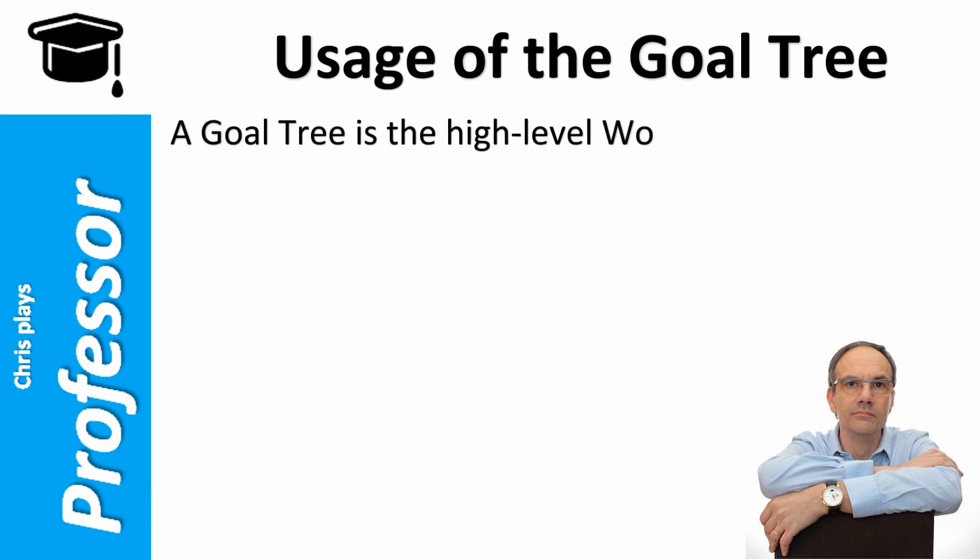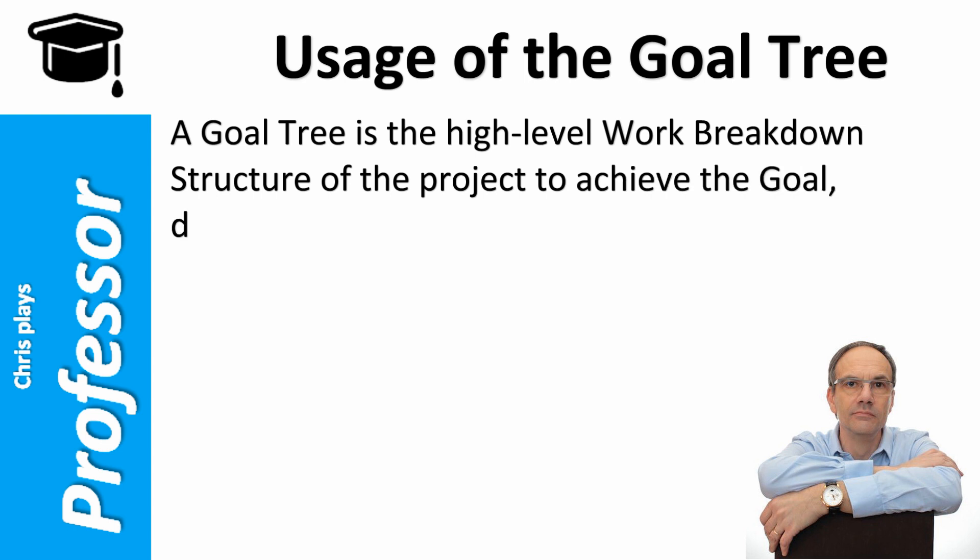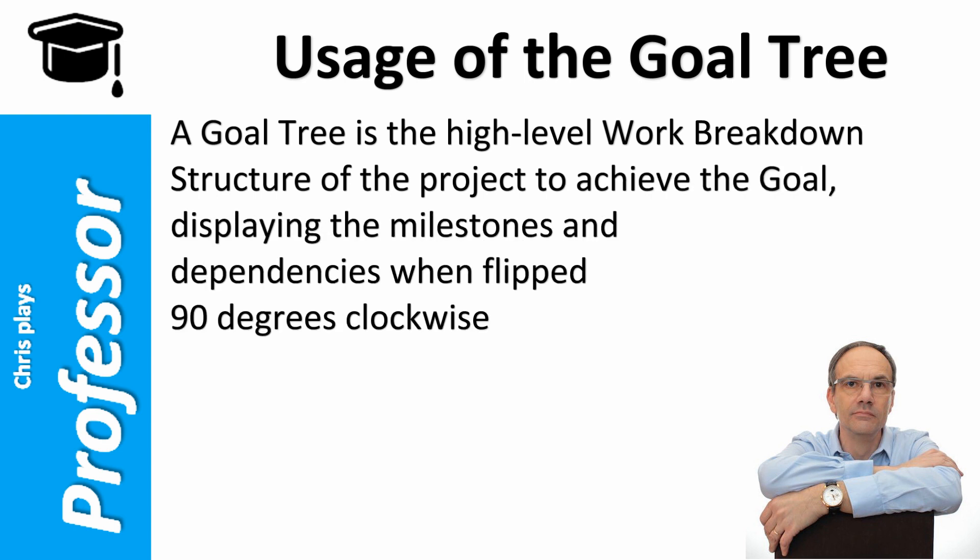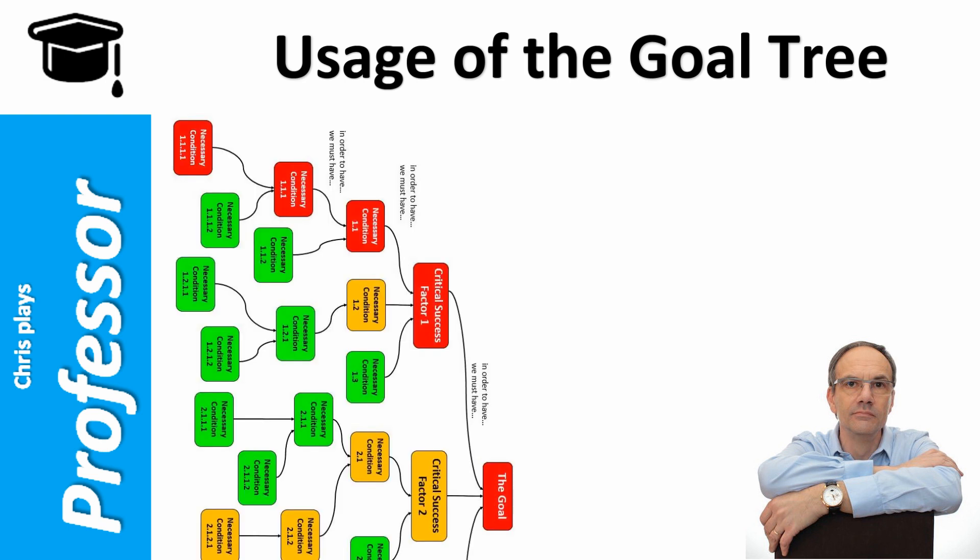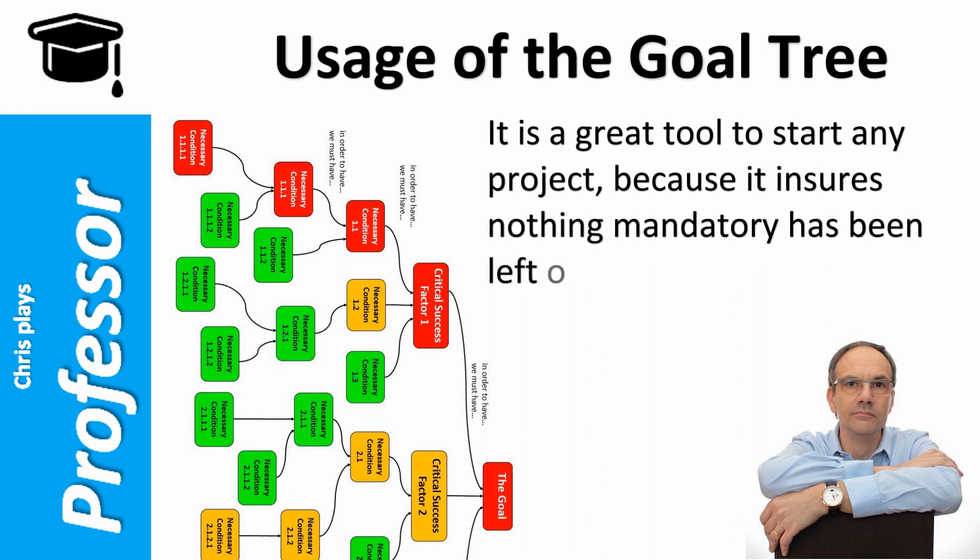Finally, a goal tree is a high-level work breakdown structure of the project to achieve the goal, displaying the milestones and dependencies when flipped 90 degrees clockwise. It is a great tool to start any project because it ensures nothing mandatory has been left out.